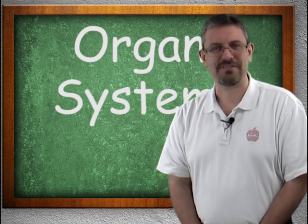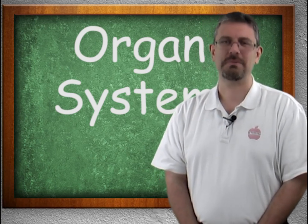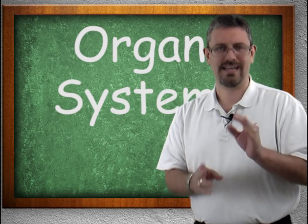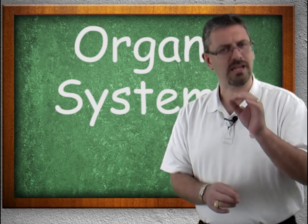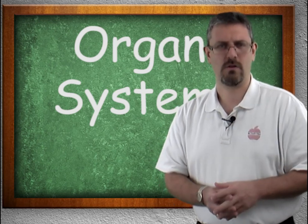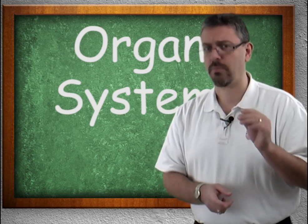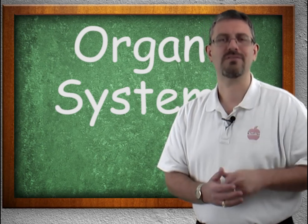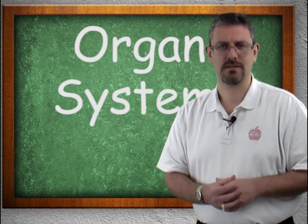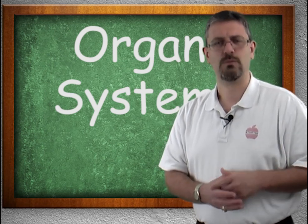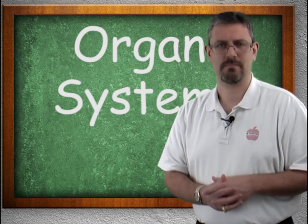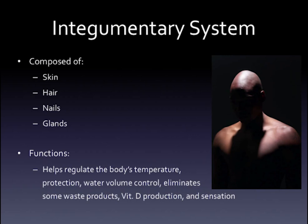These are the 11 systems that you need to be aware of. Let's go into each in a little more detail — you need to know the organs that are part of each system as well as their general functions. We begin with the integumentary system, which is composed of skin, hair, nails, and glands.